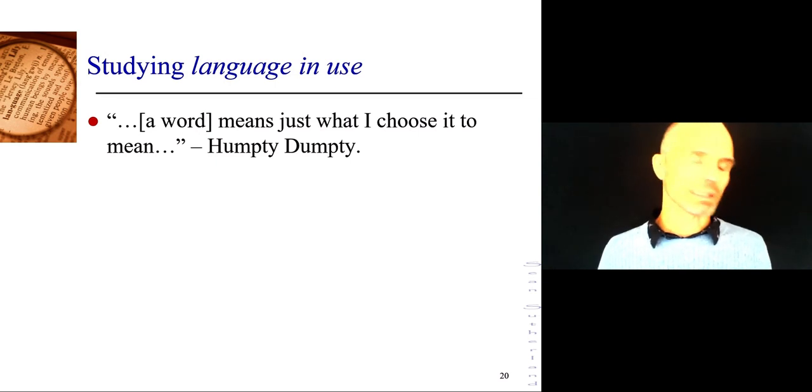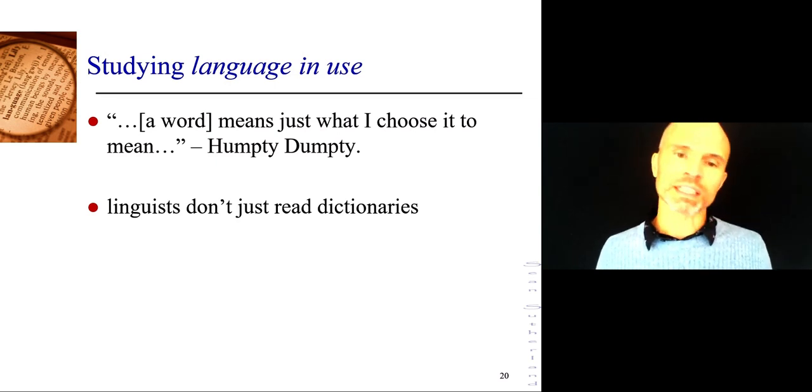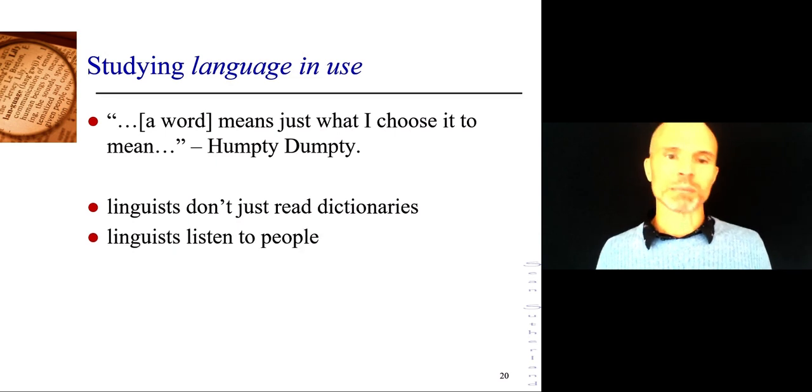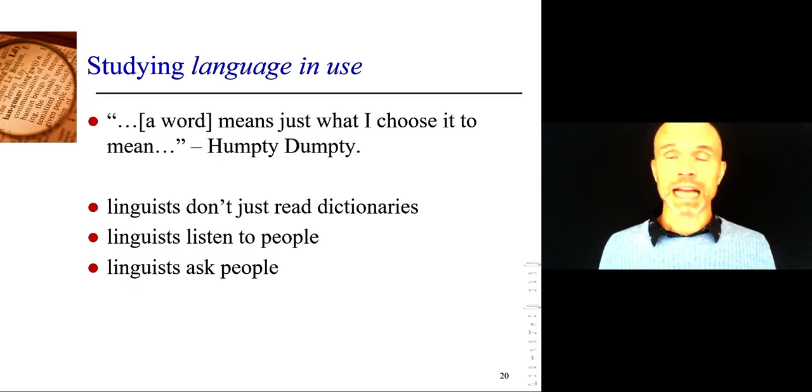A word means just what I choose it to mean, says Humpty Dumpty. It's not quite that simple, of course. We don't make up individual meanings ourselves. Others have to accept them. I can't just use a new word or use an existing word with a new definition. That will just confuse people. But that slow spread that can happen as words take on new roles, people accept them, collectively choose that the word will have this new meaning. That's really what a linguist thinks. So linguists don't read dictionaries. Well, they do read dictionaries, but they don't just read dictionaries. They listen to people, what are people saying, what are people writing, and they can even directly ask people.